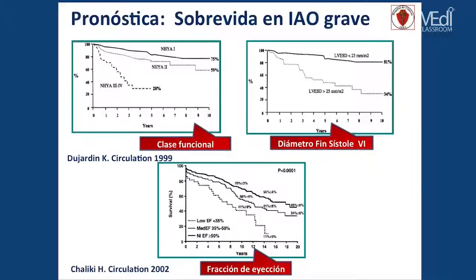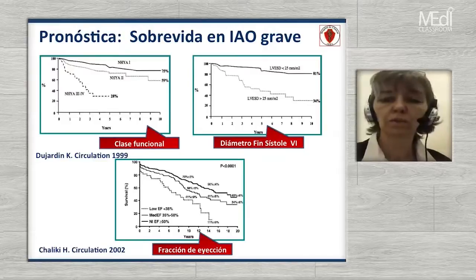Un trabajo muestra la sobrevida según los síntomas; otro, la sobrevida según las dimensiones del diámetro de fin de sístole adecuado a la superficie corporal; y otro trabajo muestra la sobrevida según la fracción de eyección. Estas tres cosas van a determinar nuestro pronóstico y cuándo tenemos que tomar una conducta activa, que es lo que determinan las guías.